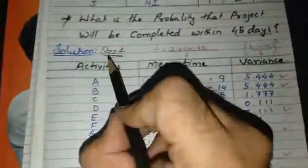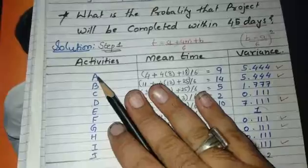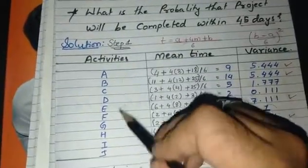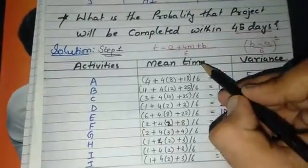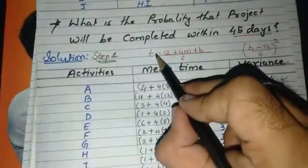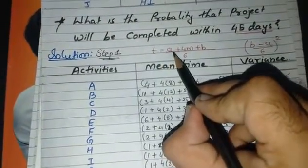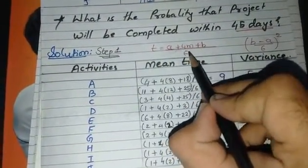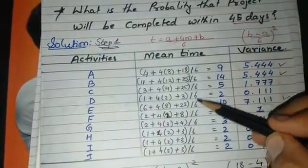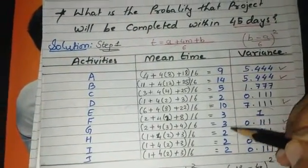Step one: we have to make a table. For that we will write the activities, then we will find the mean time. Remember the formula: t = (a + 4m + b) / 6. For each activity you have to find the mean time.